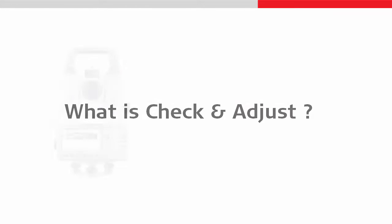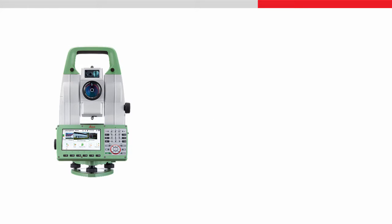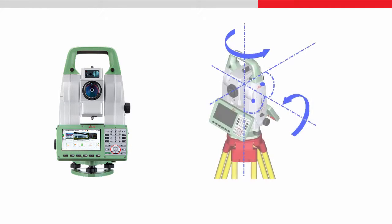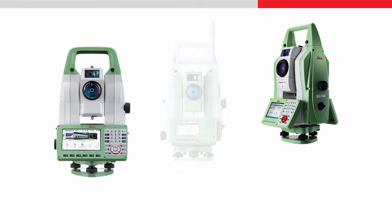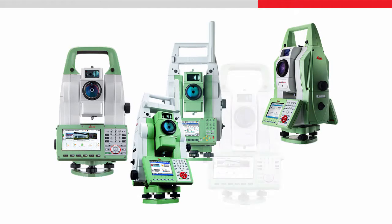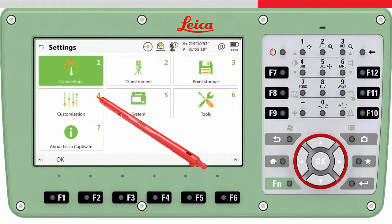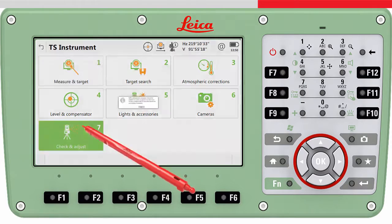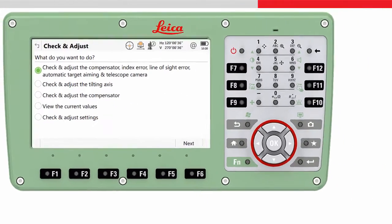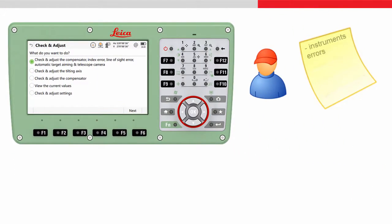As previously mentioned, a total station has to fulfill specific requirements. Unconsidered misalignments of the rotational axis can lead to wrong results. The check and adjust tool can be found in all currently available Leica Total Stations and Multi-Stations, in Settings, TS Instrument, and Check and Adjust. The tool allows the user to determine the typical instrument errors as well as misalignments of the automatic target aiming and the crosshair of the telescope camera in an easy and fast way.